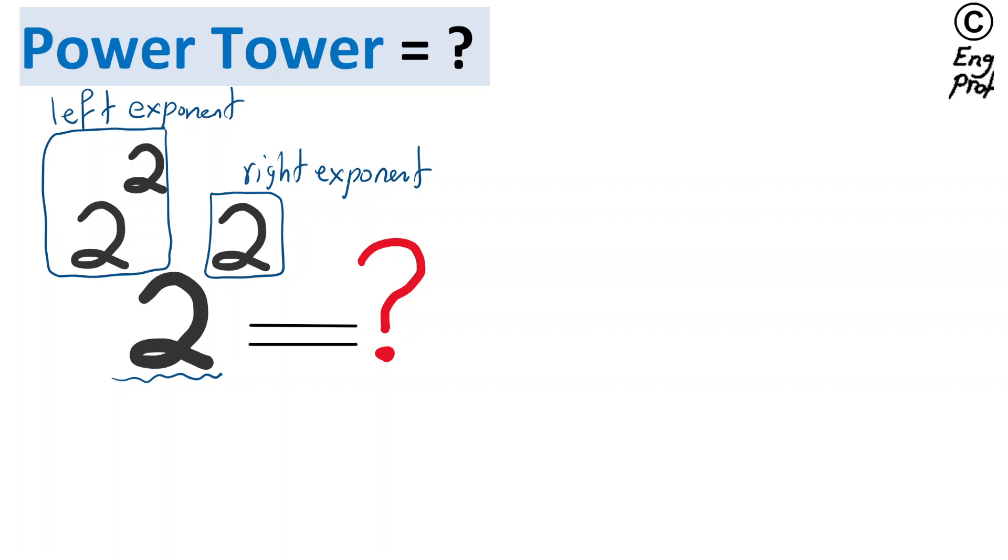Another way to write this is recognizing that the left exponent, or tetration, or hyper4 operation has higher priority or precedence compared to the right exponent. So the right way of writing this is in the form of 2 to the left exponent, or tetrated to 2 to the 2, and then the whole thing to the power of the right exponent.